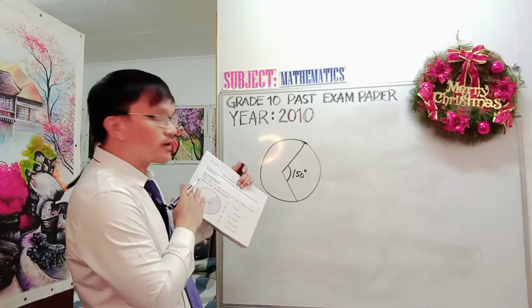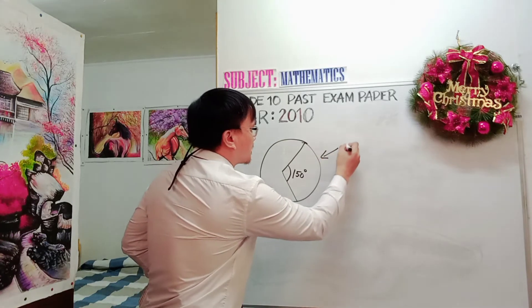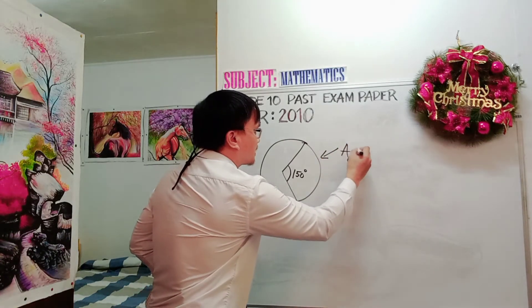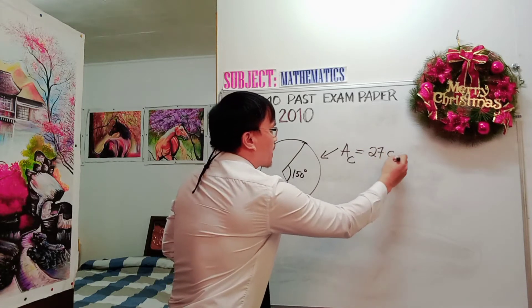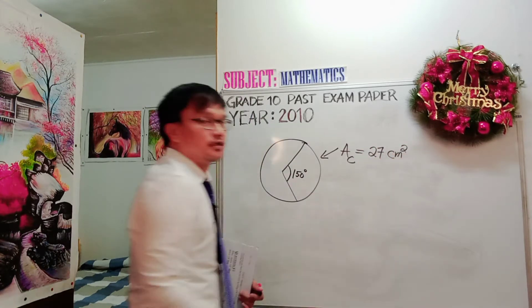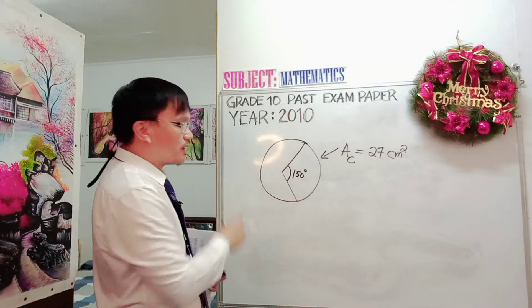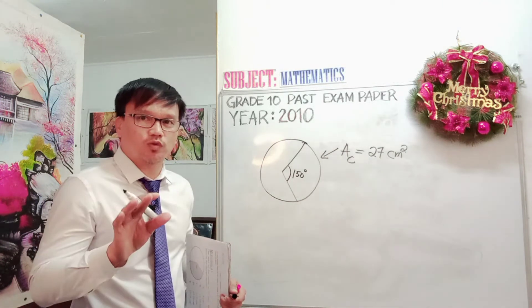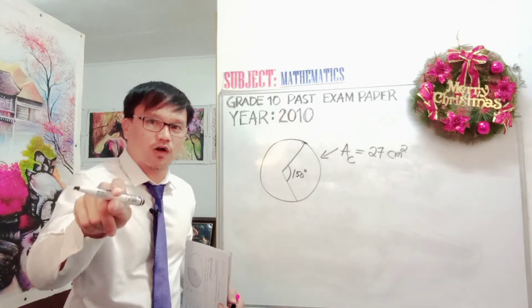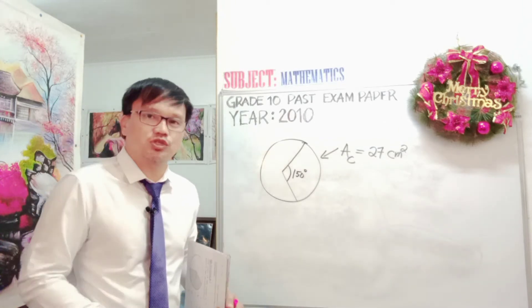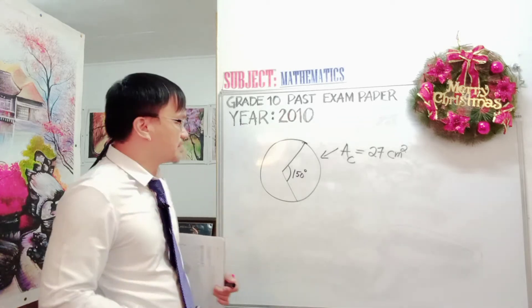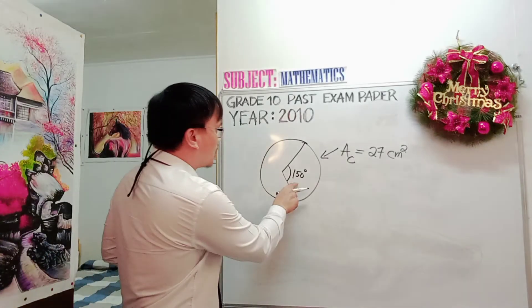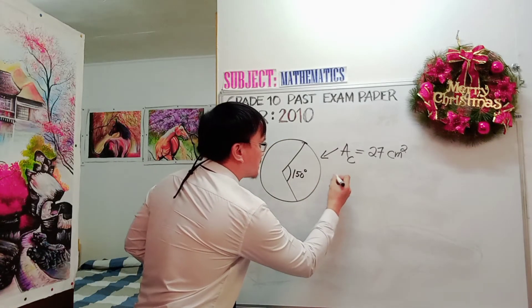So the angle of the sector here is 150 degrees. Now, it is already given that the area of the circle is 27 square centimeter. When you encounter this question in the exam, don't worry, don't panic. As long as you are watching this video, I am pretty sure you will be able to secure the one mark in your national examination.